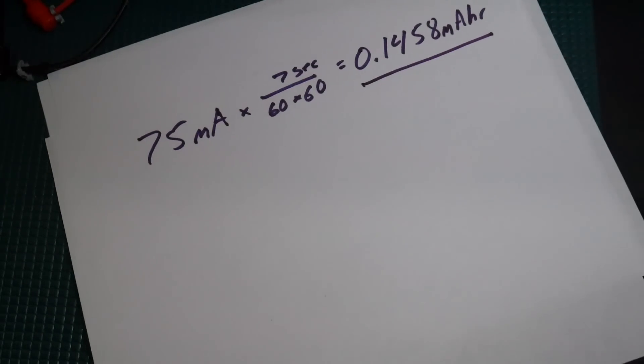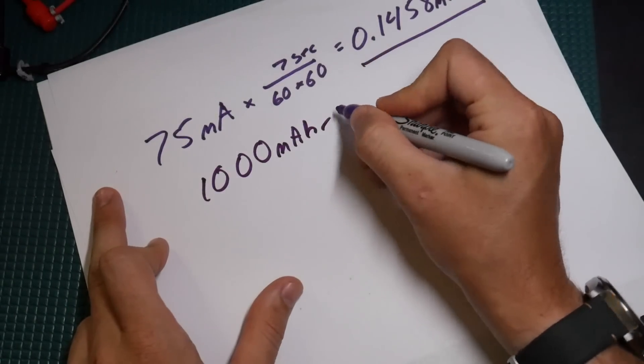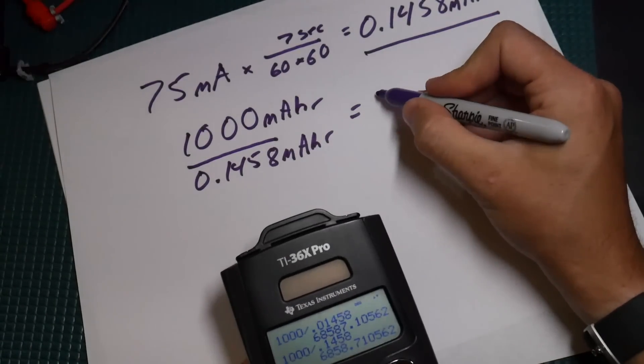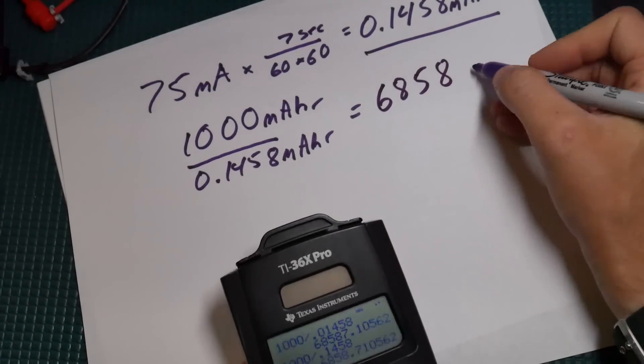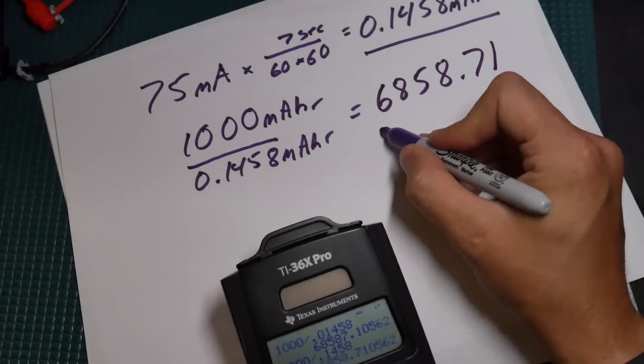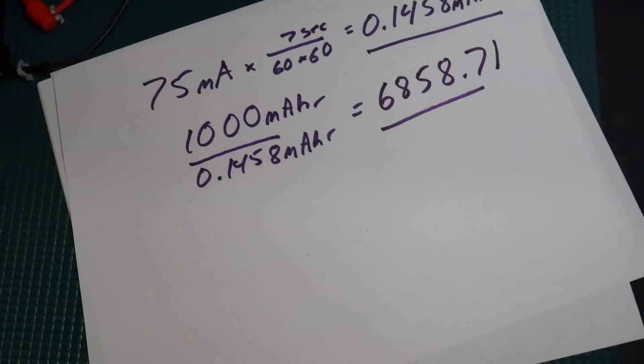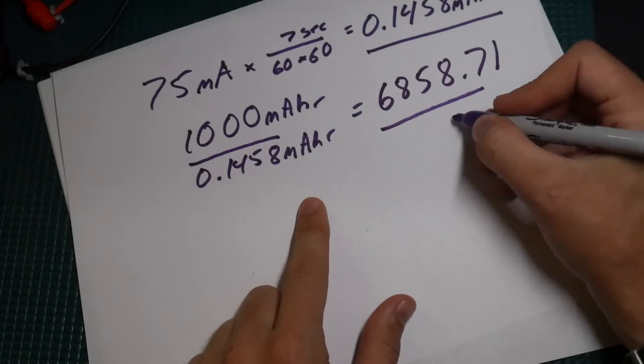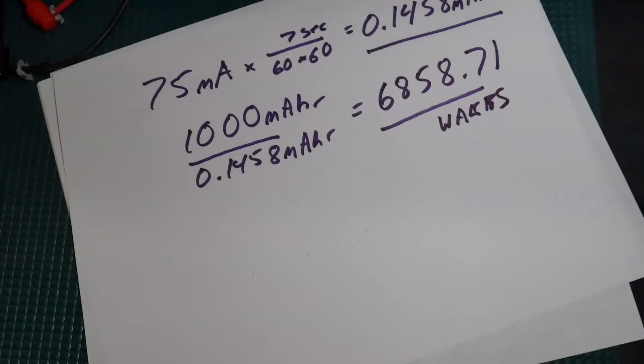We take our battery rating, 1,000 milliamp hour, and divide it by that and we get the exact same number we had before. So the math all still works out. This actual number, 6,857, is cycles or wakes or trigger events - how many times you could wake it up on that 1,000 milliamp hour battery. It's kind of cool, so you can work it out.